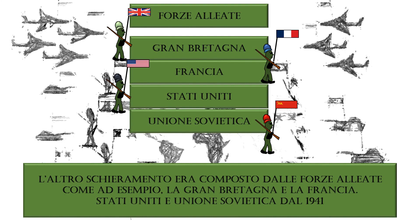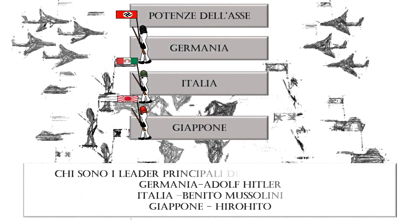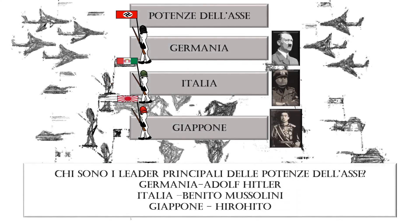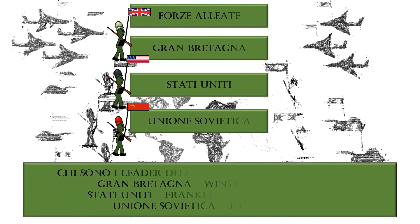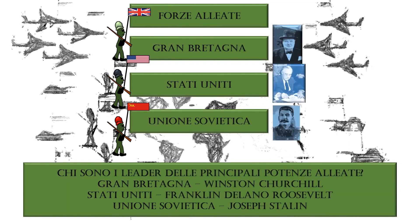The main leaders of the Axis powers were: Germany — Adolf Hitler; Italy — Benito Mussolini; Japan — Hirohito. The leaders of the major Allied powers were: Britain — Winston Churchill; United States — Franklin Delano Roosevelt; Soviet Union — Joseph Stalin.